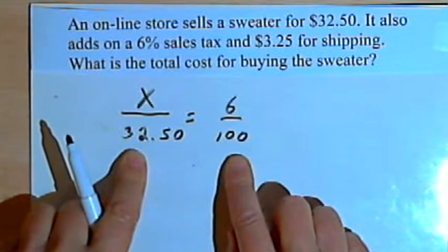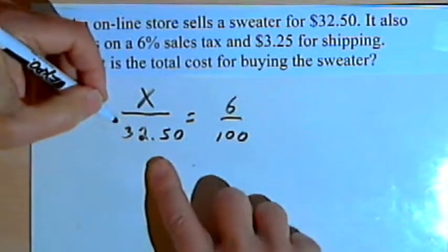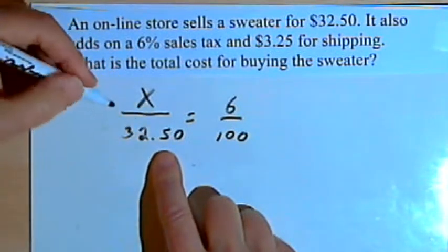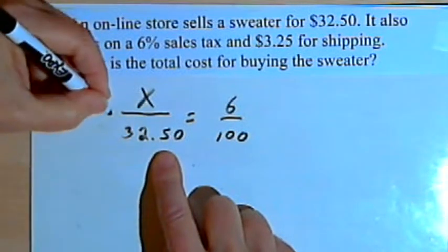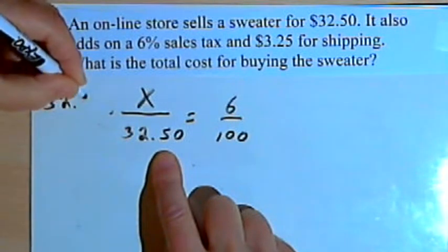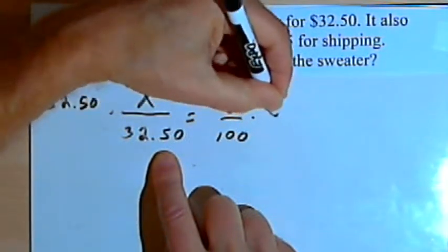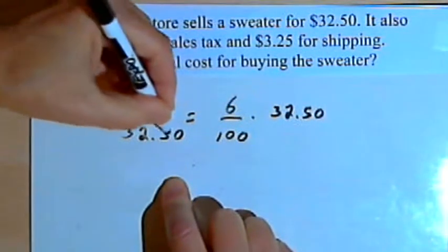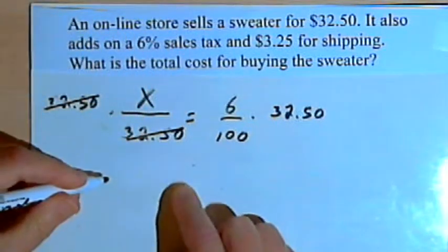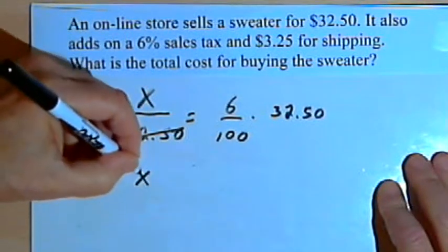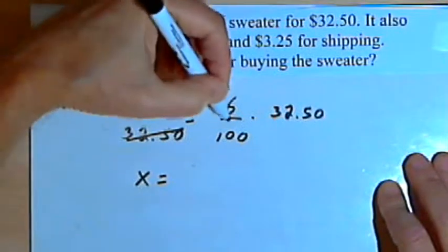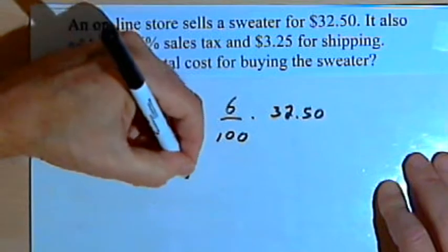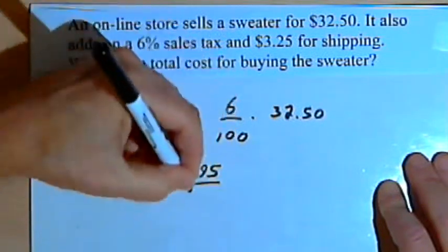So now I've got this proportion. I want to solve it. I want to get rid of the 32.50 that's in the denominator of the left side. I want to get the x by itself. So I'll multiply both sides by that amount. That allows me to cancel out 32.50 on the left and just get an x.